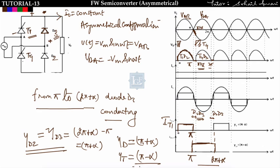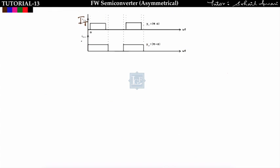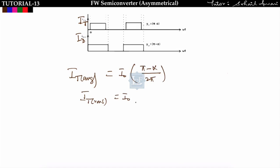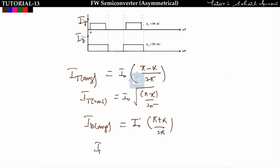The average output voltage and source current waveform remain the same in all semi-converters. Now finding the thyristor and diode current values: IT average equals I0 times (pi minus alpha) upon 2pi. IT rms equals I0 times the square root of (pi minus alpha) upon 2pi. ID average equals I0 times (pi plus alpha) upon 2pi. ID rms equals I0 times the square root of (pi plus alpha) upon 2pi.